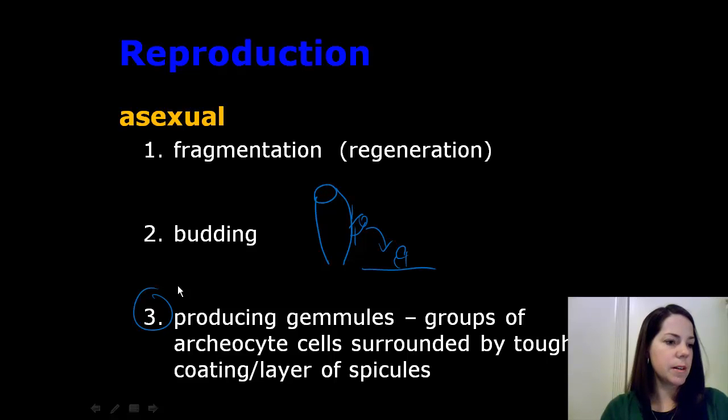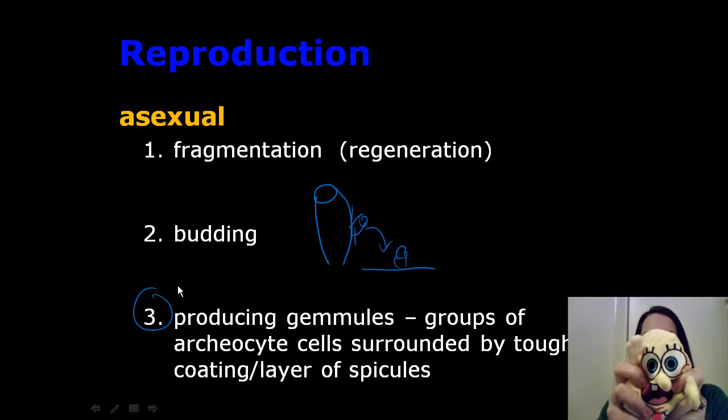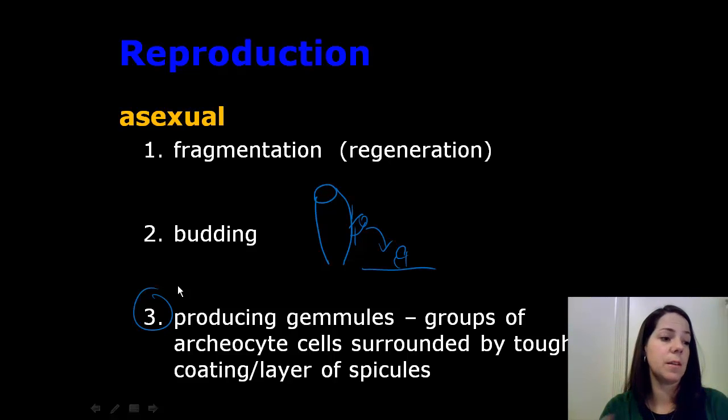the third form of asexual reproduction is producing gemmules. So what happens here is when there's difficult conditions present, such as the sponge needs to survive droughts or freezing temperatures, the sponge will produce gemmules. Help me! My house is shrinking! Gemmules are groups of archaeocytes surrounded by a tough outer coating of spicules to protect them. The gemmule will survive even if the adult sponge perishes or is killed off by harsh conditions. Once the favorable conditions return, such as a damper environment and warmer temperatures, then the gemmules will regrow into an adult sponge.